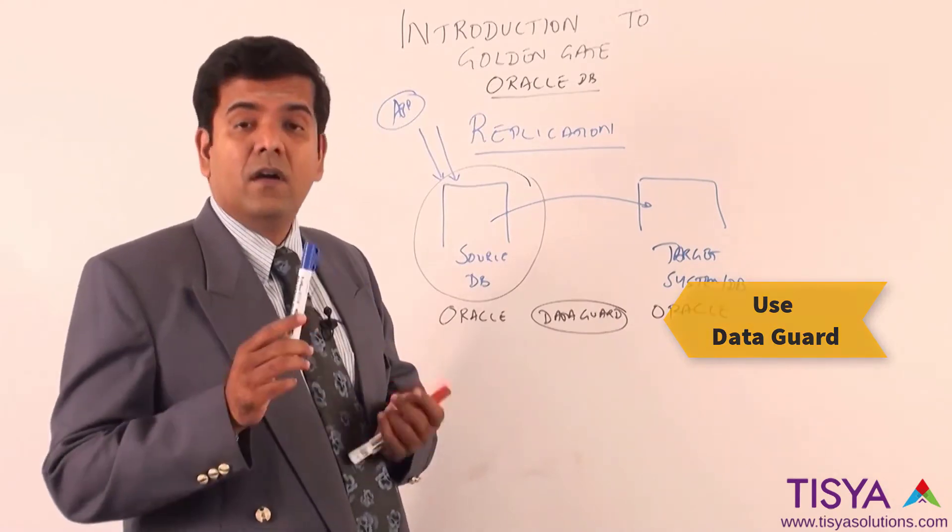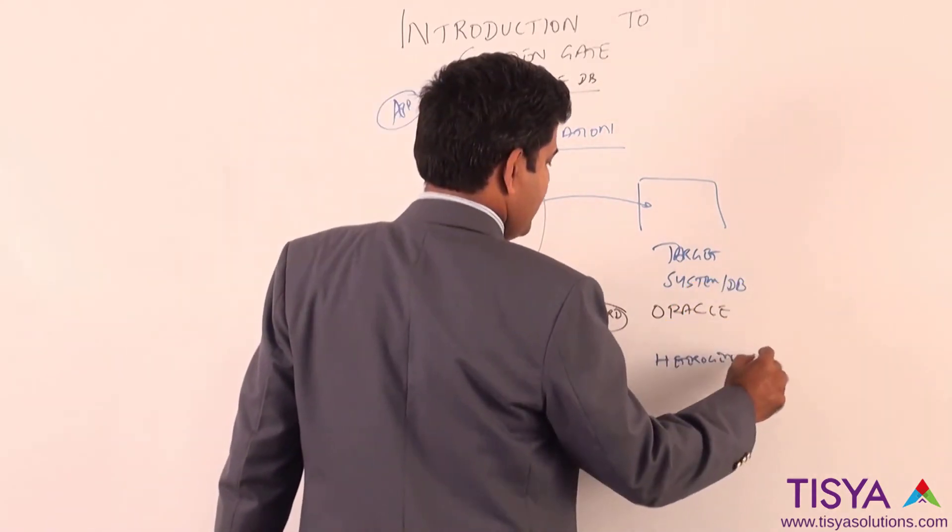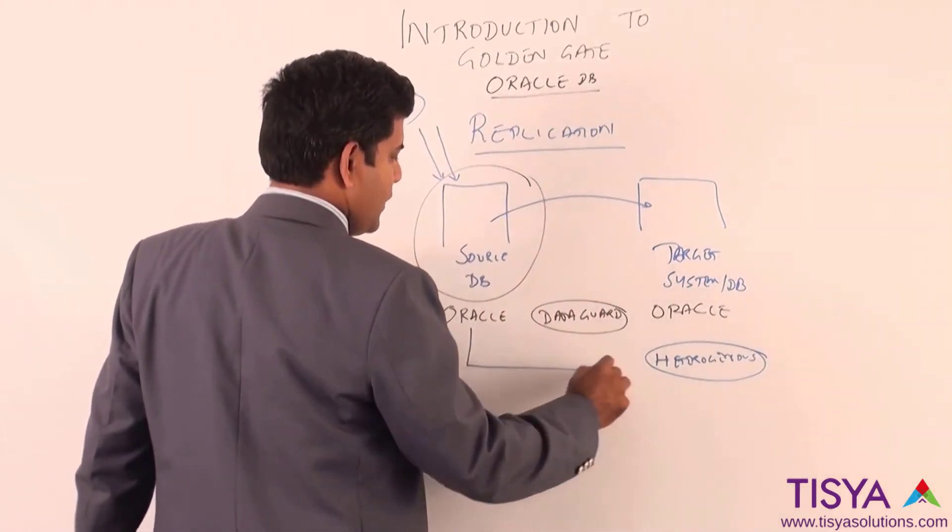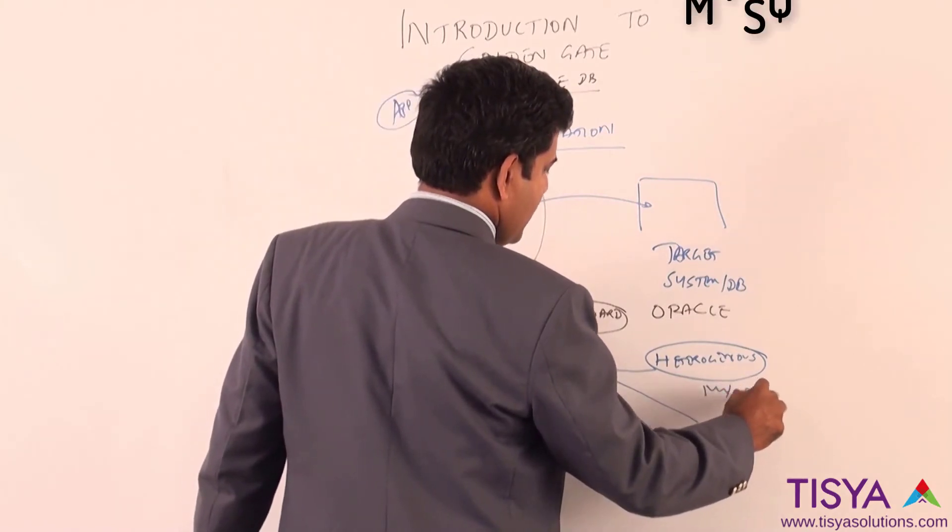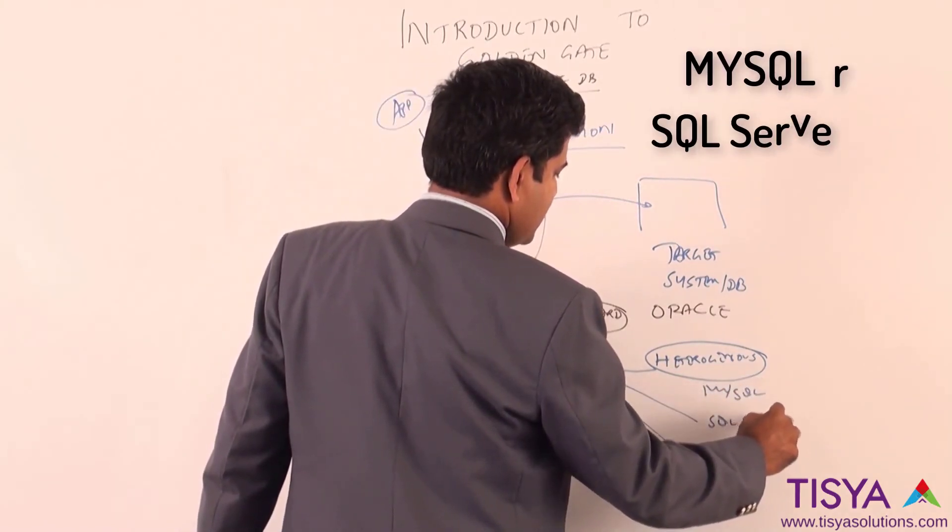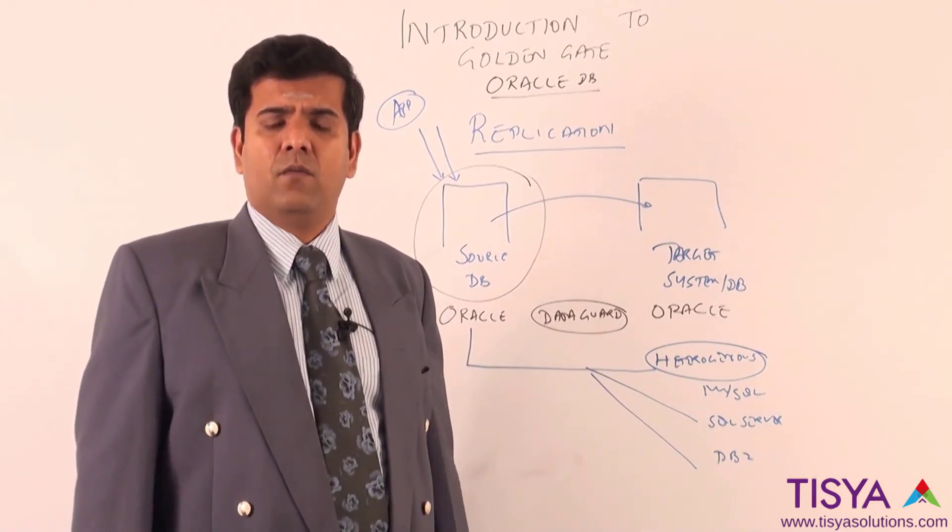But the beauty of Golden Gate is that I could have a heterogeneous environment where the source is Oracle but the target is, for example, MySQL, SQL Server, or DB2. There are many databases that are supported by Golden Gate.